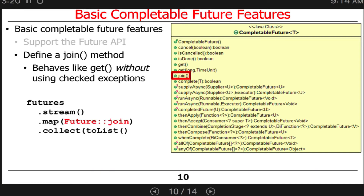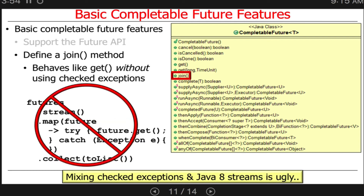So how is join like get? It turns out that join behaves like get, except it doesn't require the use of checked exceptions. Get requires checked exceptions. So you can write code like this: you have a collection of futures, you turn them into a stream, you join with each of the futures, and collect all that into a list. Whereas if you tried to do this with get, you'd have to have a try-catch block to catch the checked exception, which is obviously very ugly. Checked exceptions and streams really don't go together very well, so that's why they have join.